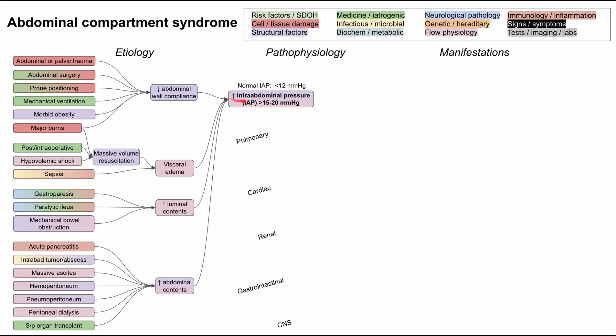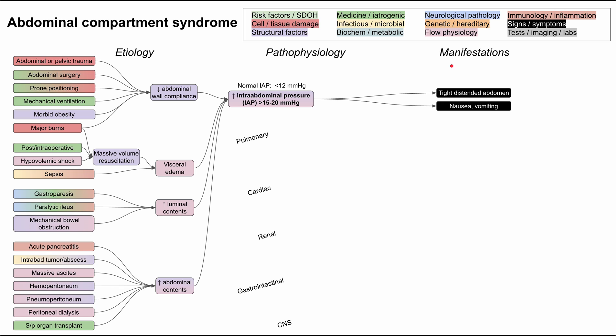All of these etiologies lead to one thing: increased intra-abdominal pressure, with IAP greater than 15 to 20 millimeters of mercury. On physical exam, this elevated pressure causes a tight, distended abdomen, which can make the patient very uncomfortable, and patients can also experience nausea and vomiting.